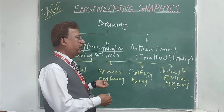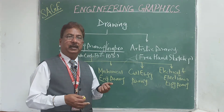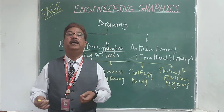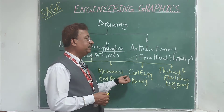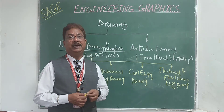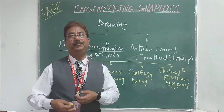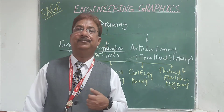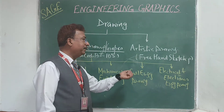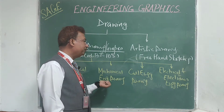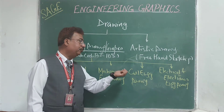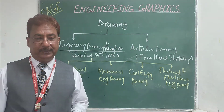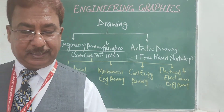In drawing we can use instruments and dimensions, and if required we can enlarge or reduce the size of the object. Civil engineers cannot draw on actual size so they draw reduced-size drawings, while electronics people enlarge components. Mechanical people can draw actual size, reduced, or enlarged drawings. In senior semesters, you will study mechanical, civil, electrical, and electronics drawing as per your branch. Right now in this chapter we are going to discuss geometrical drawing.